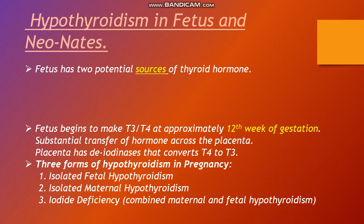The fetus has two potential sources of thyroid hormone. The fetus begins to make T3 and T4 at approximately the 12th week of gestation. There is also sustained transfer of hormone across the placenta. The placenta has iodineases that convert T4 to T3.